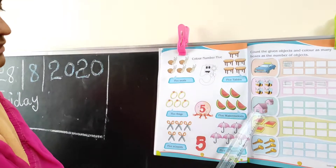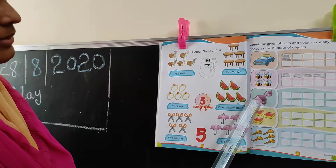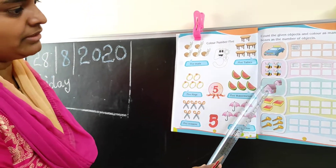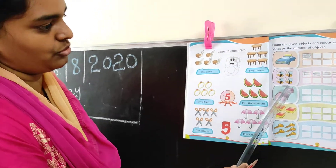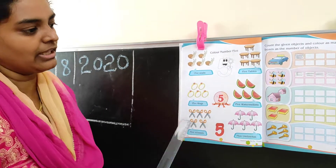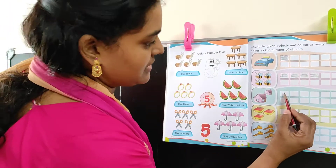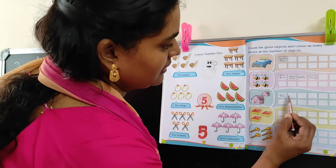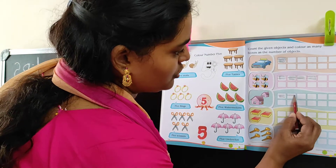Next one. How many houses are there? One and two. You color two boxes. One, two.